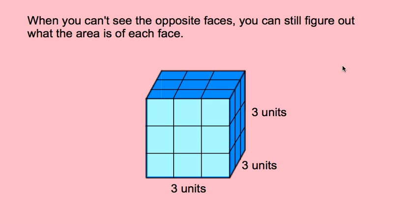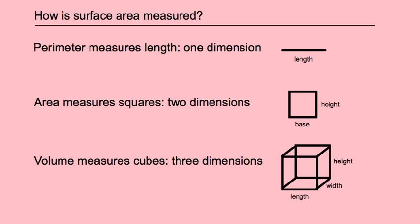We're just going to look at how surface area is measured. Reviewing now: perimeter is a measure of length, just one dimension — how long the lines are all the way around a shape. Area measures the number of squares that can fit in the shape, and there are two dimensions: base times height, or length times width. It's the bottom times how tall it is, and we say it's a certain amount of units squared.